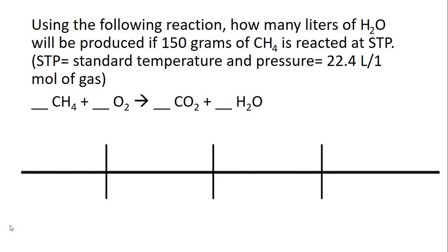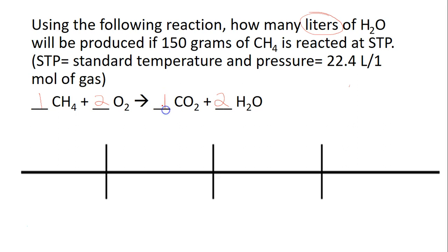For this last example, there's a different conversion you may not be used to, but it's not much more difficult. Using the following reaction: how many liters of H2O will be produced if 150 grams of CH4 is reacted at STP? This time we're going to liters instead of grams. STP stands for Standard Temperature and Pressure — a specific temperature and pressure chemists have agreed upon — and at that temperature and pressure, 1 mole of any gas is 22.4 liters. Before we begin, we balance the equation: 1 C, 4 H's but only 2 over here so we make that 2, giving 2 O's which makes 4, and we write in our numbers.